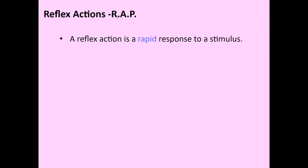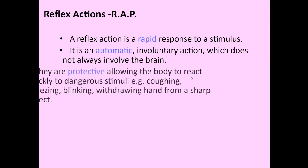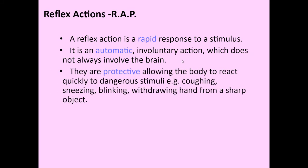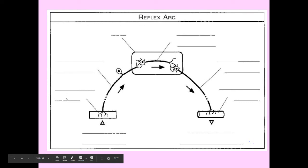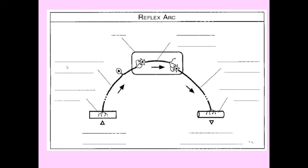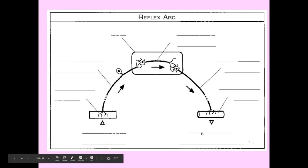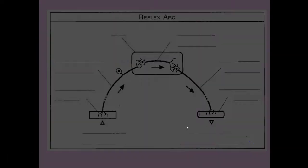Reflex reactions are rapid, automated or automatic — so they're involuntary — and they are protective. They allow you to react quickly to a dangerous stimulus without having to think about it. The pathway is: stimulus sensed by sensory cells; information travels along the sensory neuron; the sensory neuron carries information to the central nervous system via the interneuron; information is transferred from interneuron to motor neuron; the motor neuron carries the signal to the effector; and the effector completes the response — to avoid the harmful stimulus.